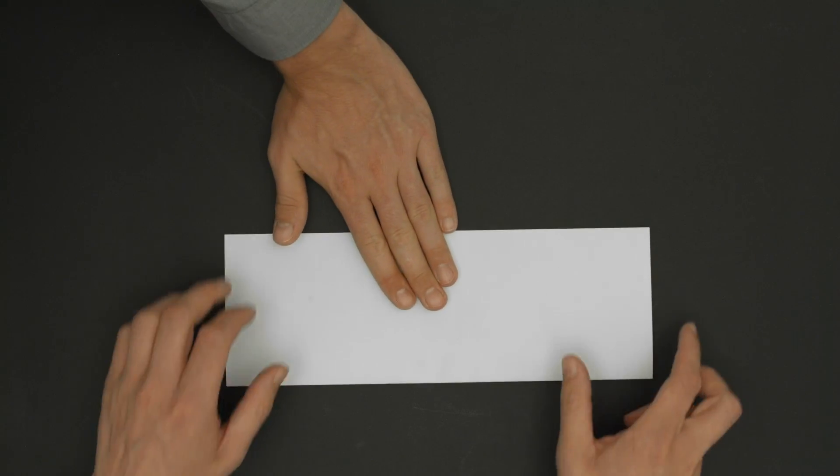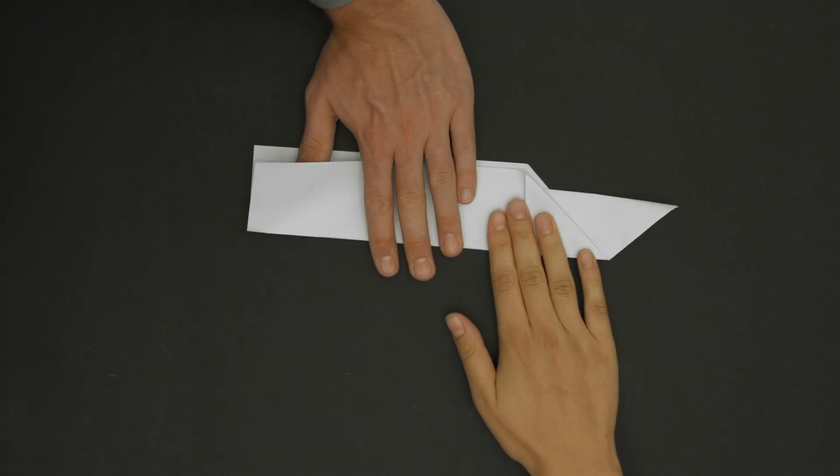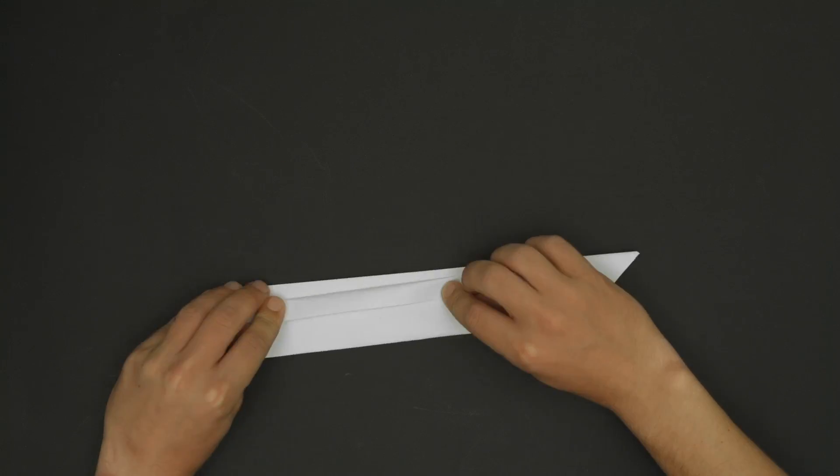Each module does a different work step. In our case a different folding step and relays the result back to the central hub until the paper plane has been completely folded at the end.